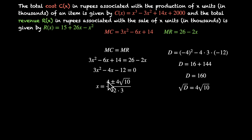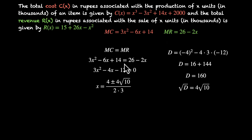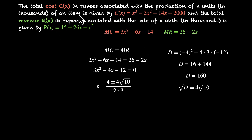Using the quadratic formula, x = (-b ± √D) / (2a) = (4 ± 4√10) / 6. This gives two values, but one of them — (4 - 4√10) / 6 — is negative, which means producing and selling negative units. That's not realistic, so we discard that solution.